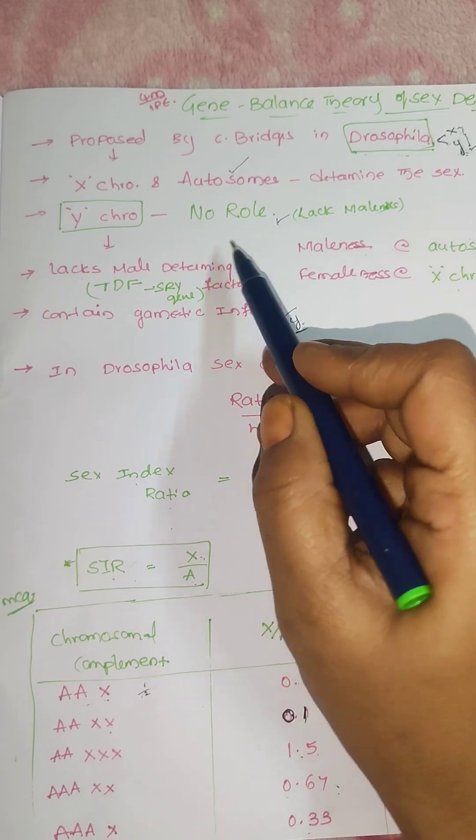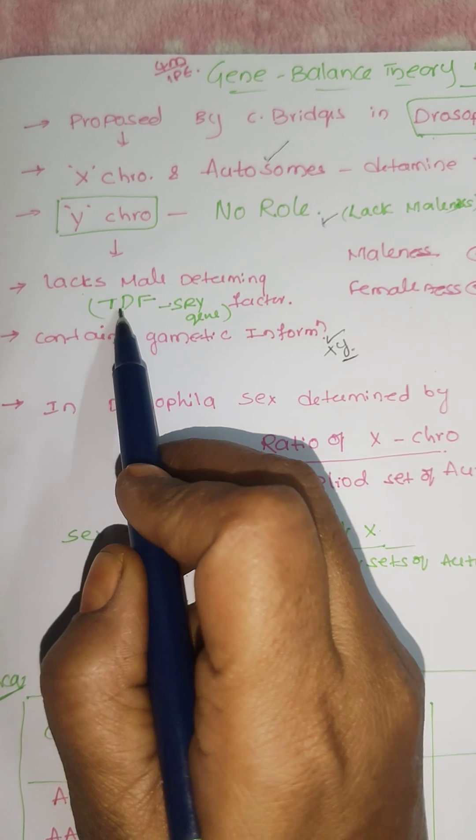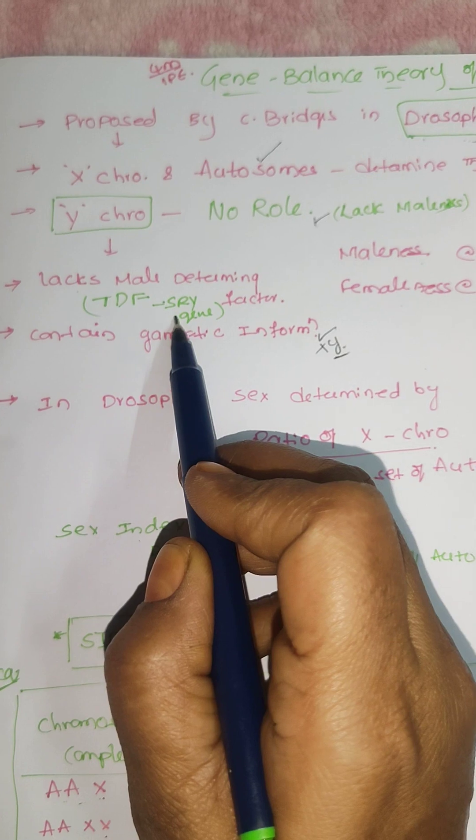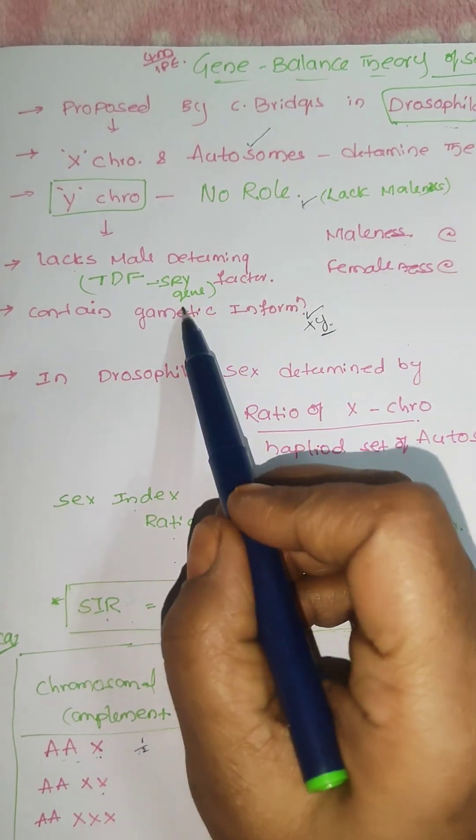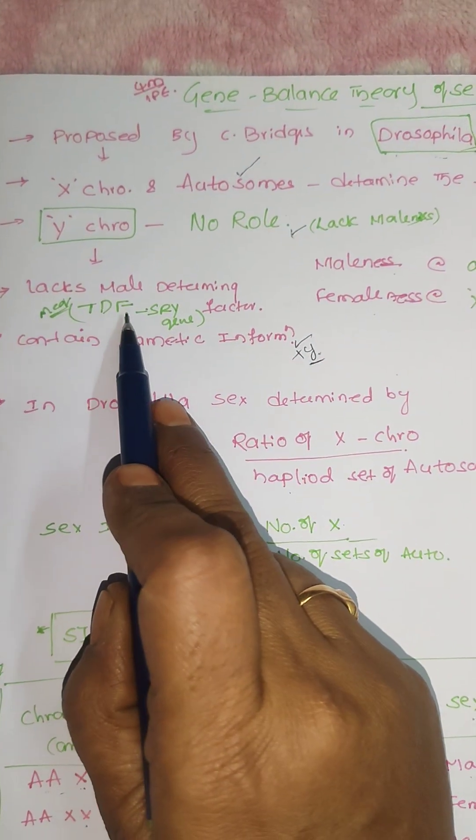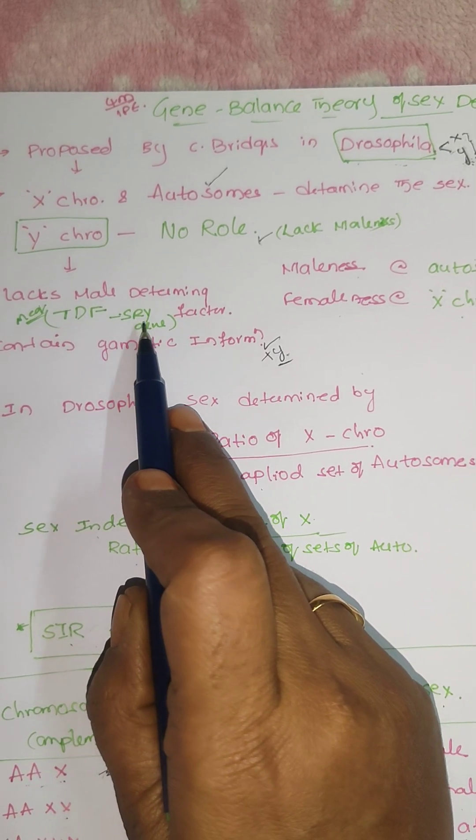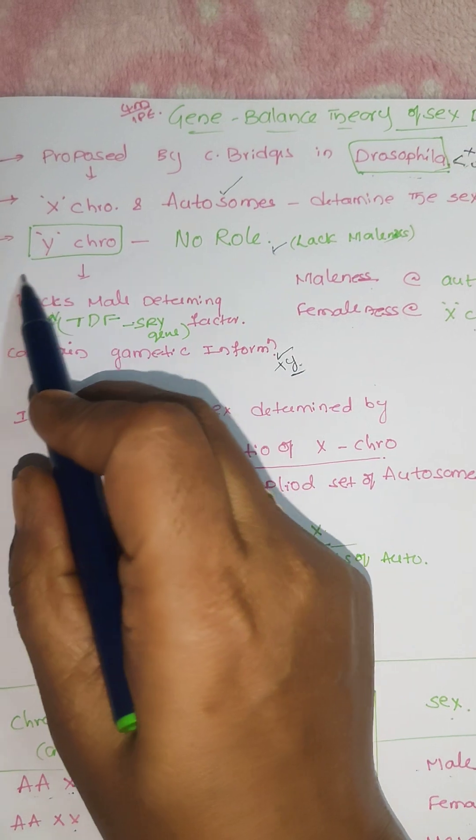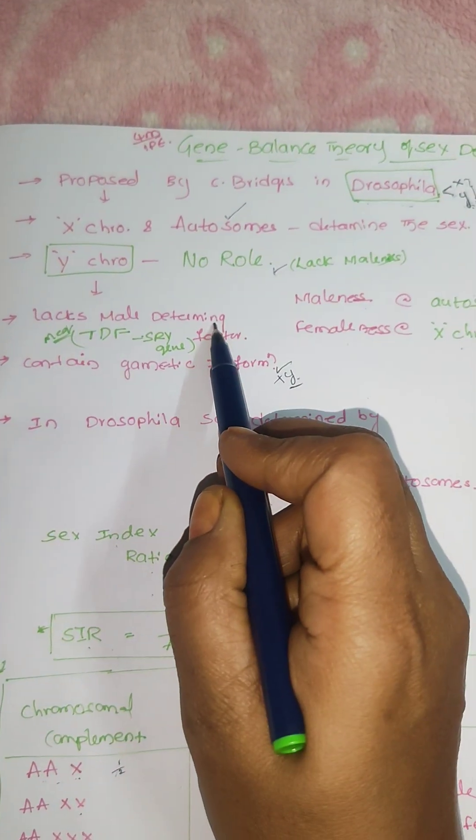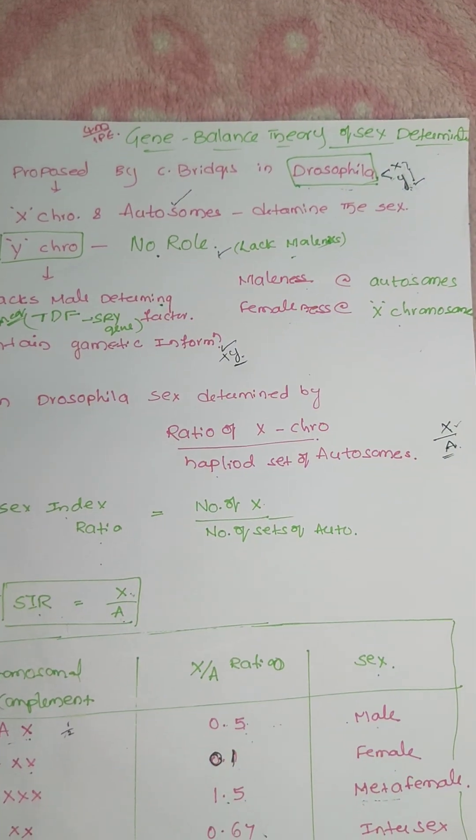So it has no role and also lack of maleness. Here it does not have TDF means testis determining factor. The gene is SRY gene. This is also important in MCQ. Testis determining factor and also SRY gene, sex determining region of Y. So due to this lack and absence in the Y chromosome, it does not play important role in the determination of sex.